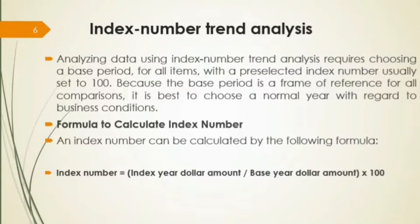In index number trend analysis, we assign an index number of 100 to the base year. The formula to calculate the index number is: Index Number = (Index Year Dollar Amount ÷ Base Year Dollar Amount) × 100. We compare each component of the income statement and balance sheet relative to 100.